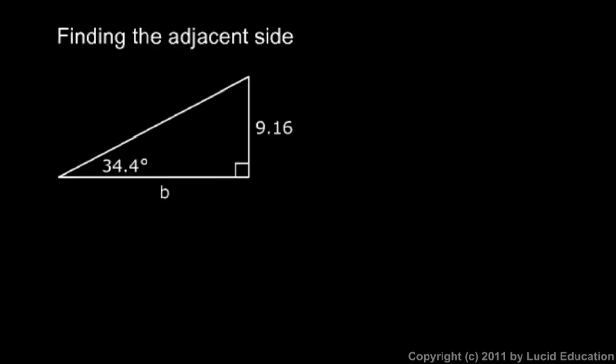Now here's a similar example, but this time we'll find the adjacent side. We're given this angle, 34.4 degrees. This length is unknown, we're calling it b. The side opposite that angle is 9.16.